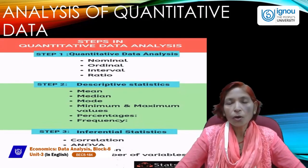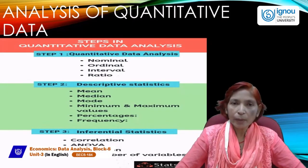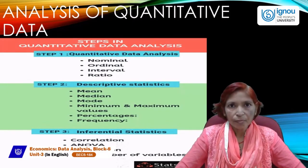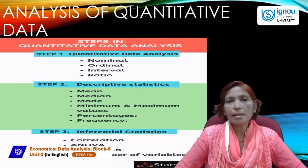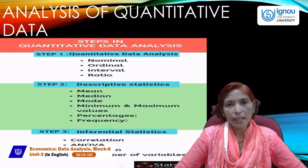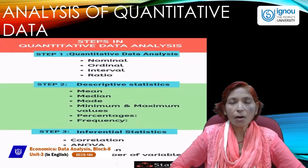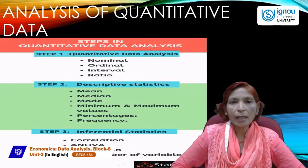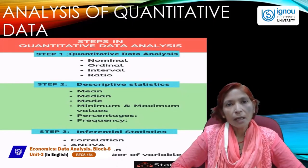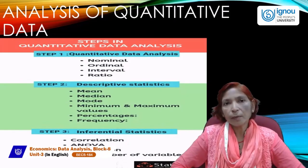Variables may be two or more. If there is only one variable, that is called univariate. If there are two variables, that is called bivariate. If there are more than two variables — like x, y, z — that is called multivariate. So there are three categories: univariate with one variable, bivariate with two variables, and multivariate with more than two variables.